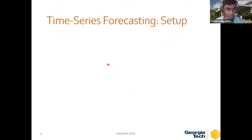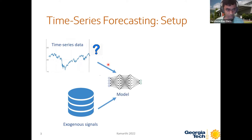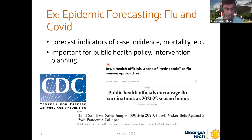Generally in the time series forecasting setup, we have time series data from the past as well as some related exogenous features which correspond to some of the generating processes related to the time series. We train the model using these two data sources to predict future values. For example, in epidemic forecasting like flu and COVID, it's useful to predict indicators like case incidence and mortality, which will help public health officials in policy planning and intervention planning.